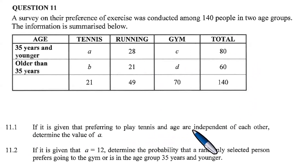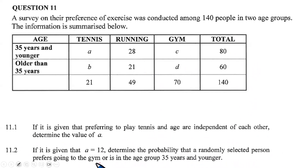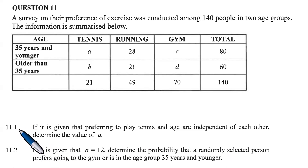Question 11.1: If it is given that preferring to play tennis and age are independent of each other, determine the value of A. Question 11.2: If it is given that A equals 12, determine the probability that a randomly selected person prefers going to the gym or is in the age group 35 years and younger.